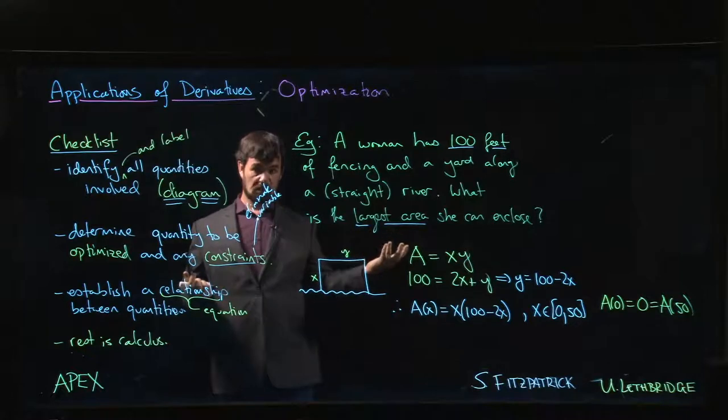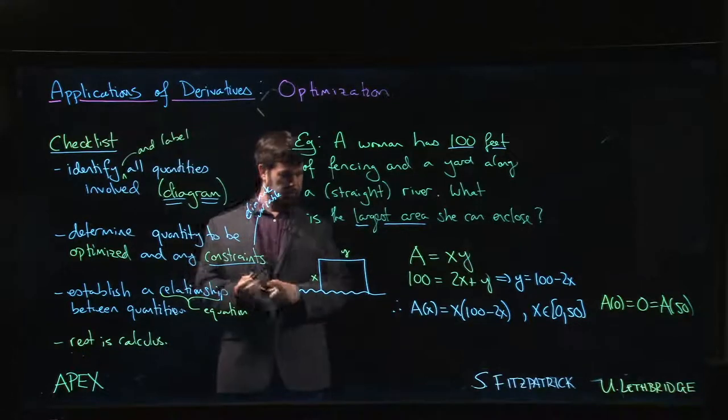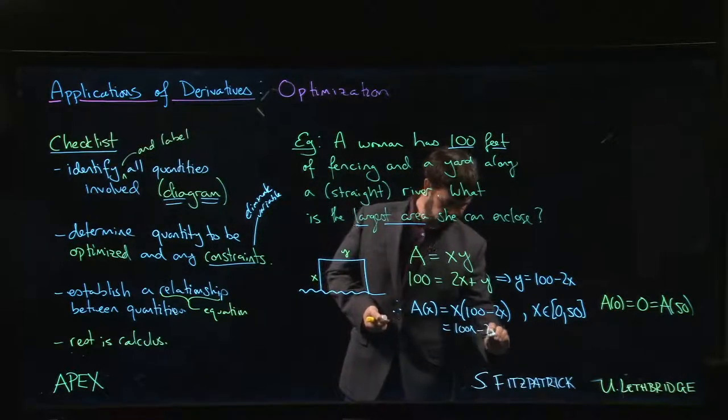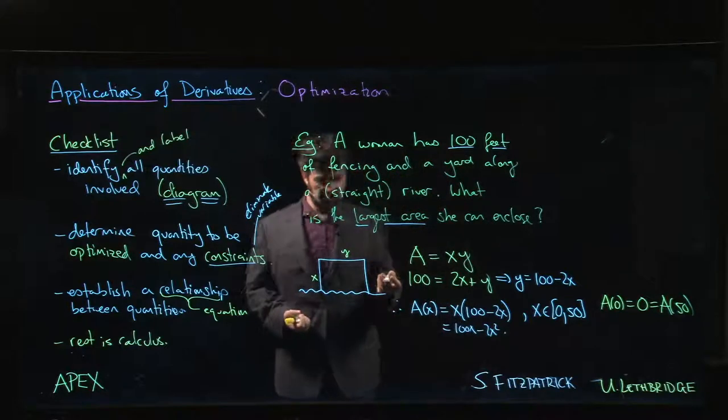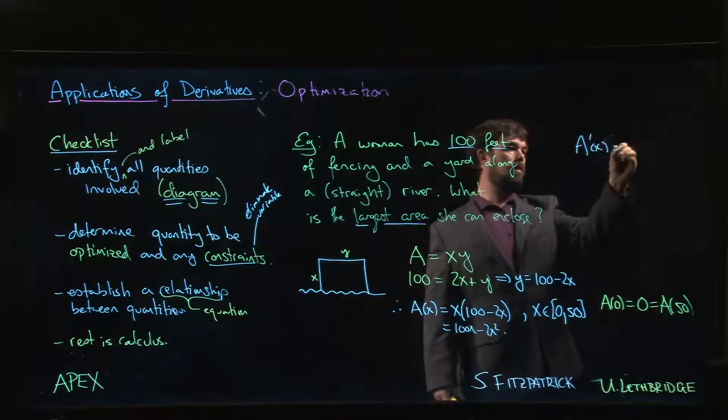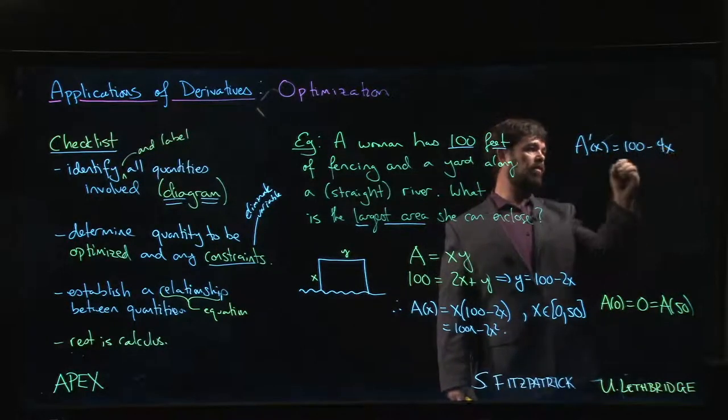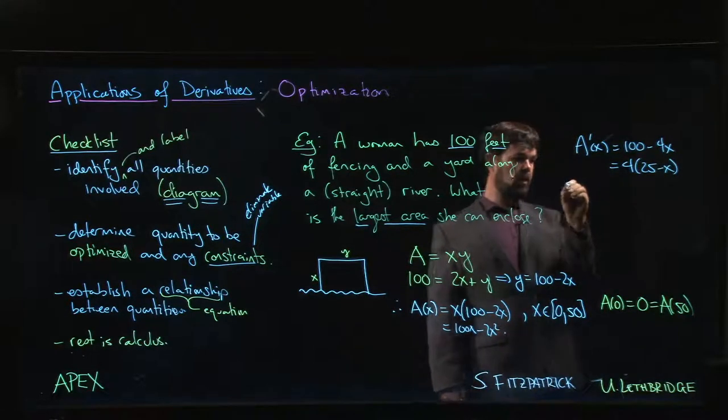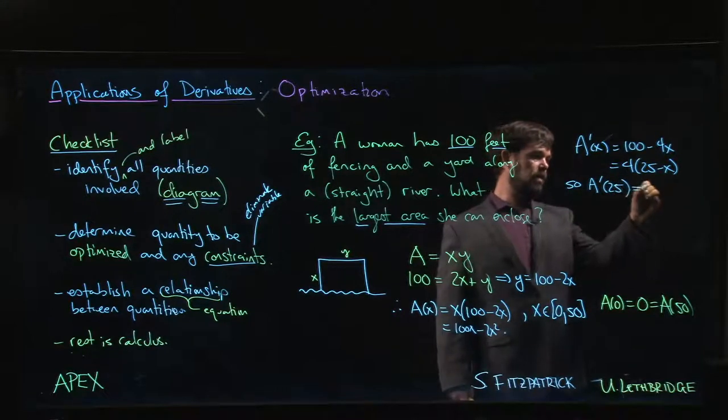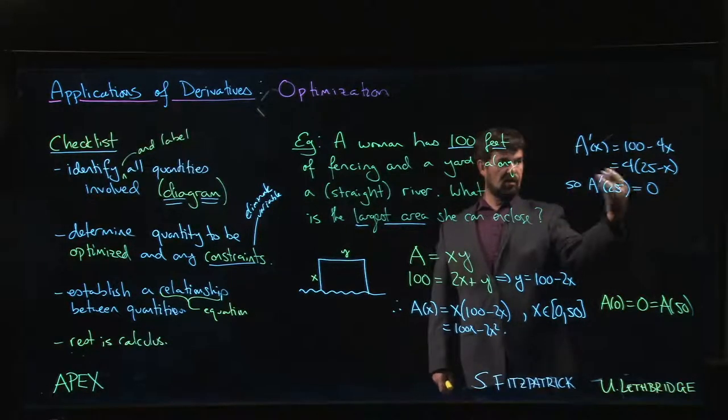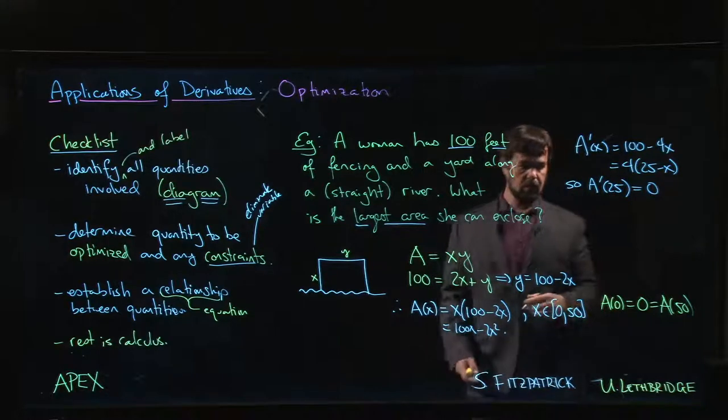We want the largest possible area, so we go looking for a critical number. So 100x minus 2x squared makes it easier to take the derivative. What is the derivative? A prime is going to be 100 minus 4x, so 4 times 25 minus x. So A prime of 25 is 0. And again, this turns out to be our only critical number. So since it's our only critical number and we've already ruled out the endpoints, the max area has to be A of 25.